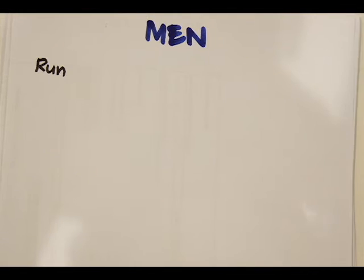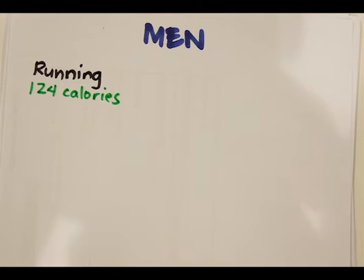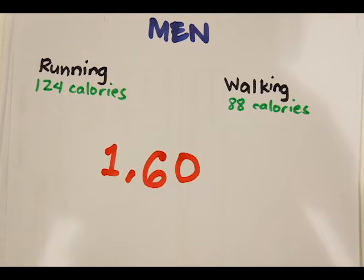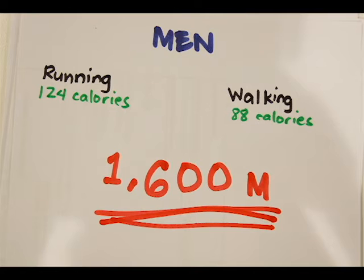When they ran, they burned an average of 124 calories. But when they walked, they only burned 88 calories. How is this possible when they cover the same 1,600-meter distance and carry the same mass, which is themselves? Why do the men who ran burn more calories than the men who walked?